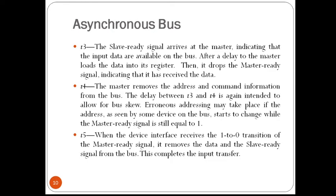At clock cycle T3, the slave ready signal arrives at the master, indicating that input data is available on the bus. Since the device interface transmits the slave ready signal at the same time it places data on the bus, the master should allow for bus skew and the setup time needed by its input buffer. After a delay equivalent to the maximum bus skew and minimum setup time, the master stores the data into its input buffer and drops the master ready signal, indicating it has received the data. At clock T4, the master removes the address and command information from the bus; the delay between T3 and T4 is intended to allow for bus skew.